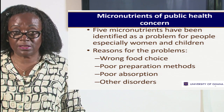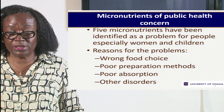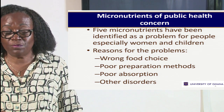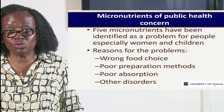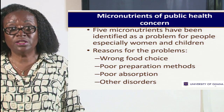Poor preparation methods — overcooking our foods — lead to poor absorption because when we destroy food through overcooking we cannot absorb the nutrients. Sometimes the food combinations are not good, making nutrients unavailable. There may also be inherent genetic disorders. But the first three factors are most important because we can do much about them, whereas for genetic disorders, there is very little we can do.